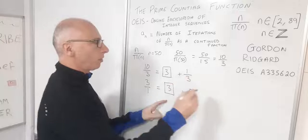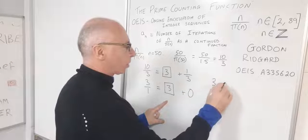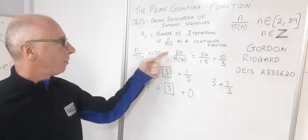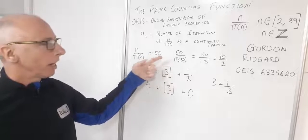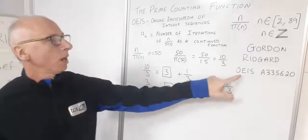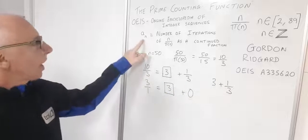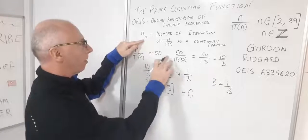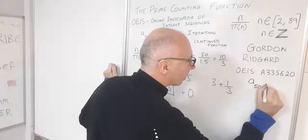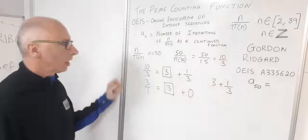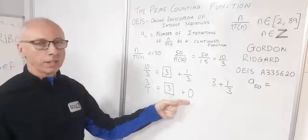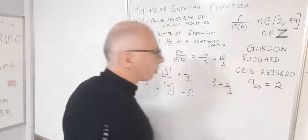This one as a continued fraction, we've got 3 plus 1 over 3. That's the continued fraction form of this iteration here. We also need to know for this sequence the number of iterations, that's what this OEIS entry is all about. So A(50), that was our original number, is going to give us 2 because there's two iterations before we get to the zero. So A(50) equals 2.